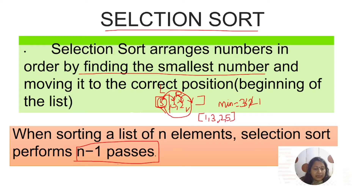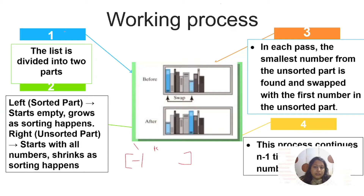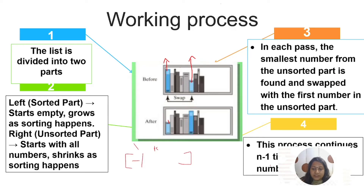Like all other sorting techniques, selection sort also performs n minus 1 passes. The list is divided into two parts: the left part is the sorted part — it starts empty and grows as sorting happens. The right part is the unsorted part — it starts with all numbers and shrinks as sorting happens. You can see the example here with a book rack: the smallest book is found and swapped to the front. In each pass, the smallest number from the unsorted part is found and placed at the start of the unsorted part.